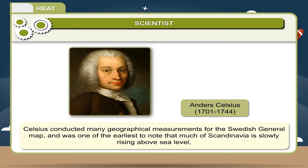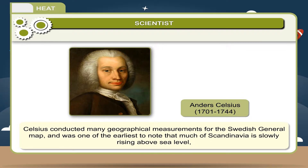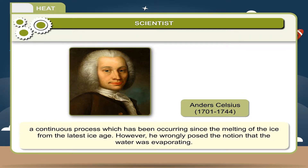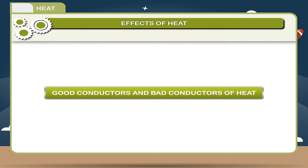Celsius conducted many geographical measurements for the Swedish general map and was one of the earliest to note that much of Scandinavia is slowly rising above sea level — a continuous process which has been occurring since the melting of the ice from the latest ice age. However, he wrongly posed the notion that the water was evaporating.